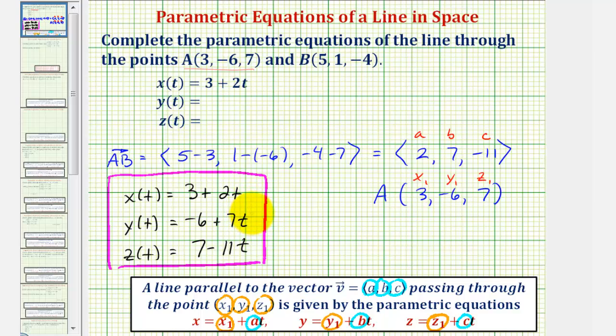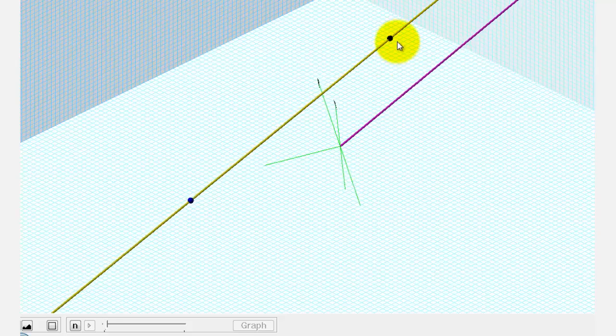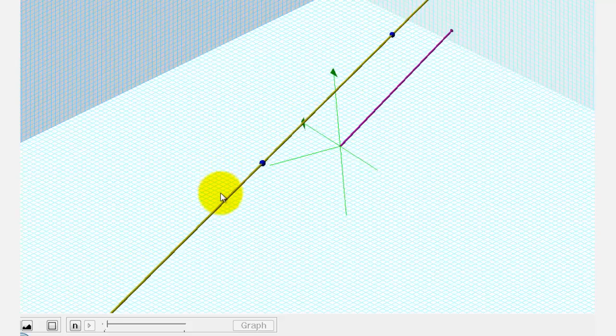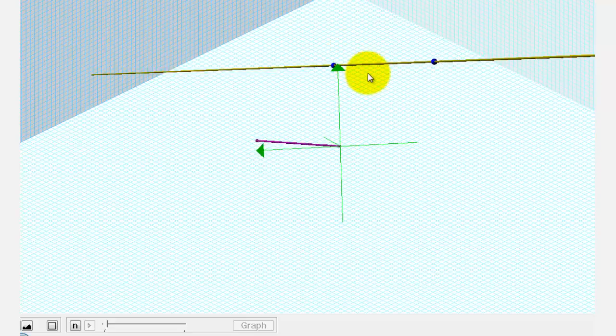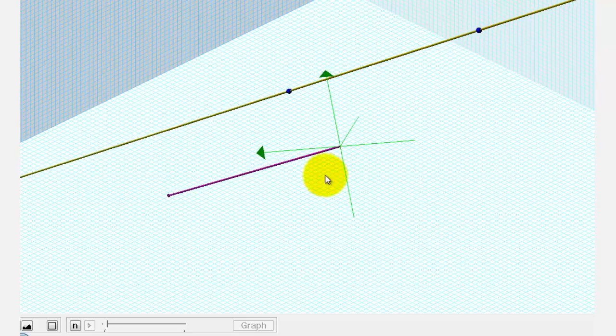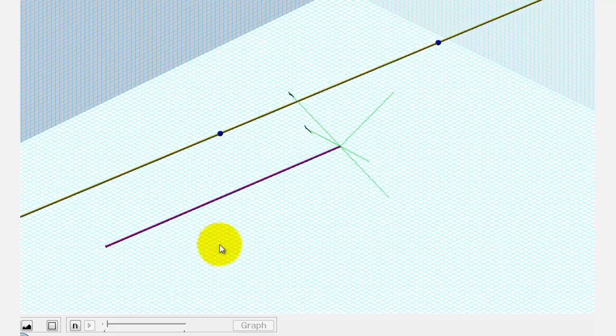Let's take a look at the graph of our line in space. Here's the graph of the line. Notice how it does pass through the two blue points, and you can also tell that this yellow line is in the same direction or parallel to our direction vector graphed here in purple. I hope you found this helpful.